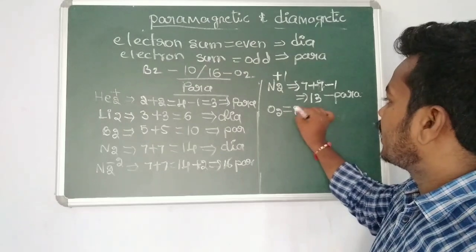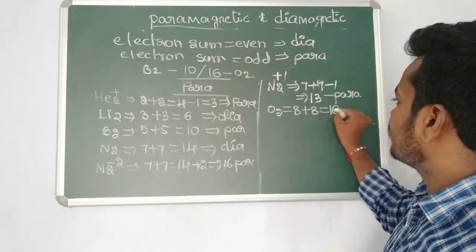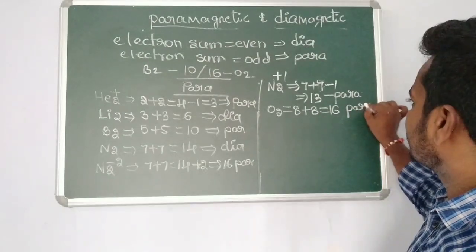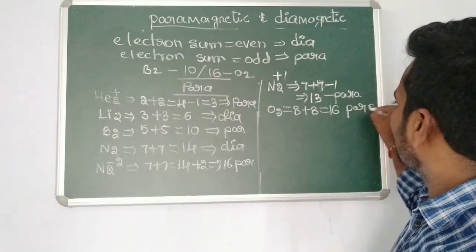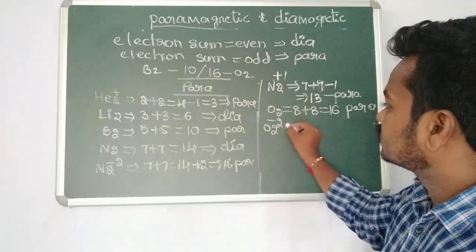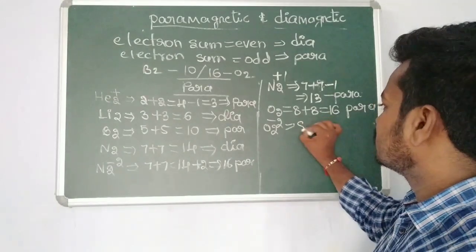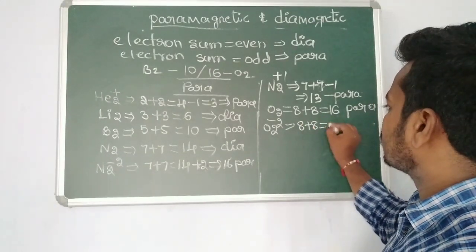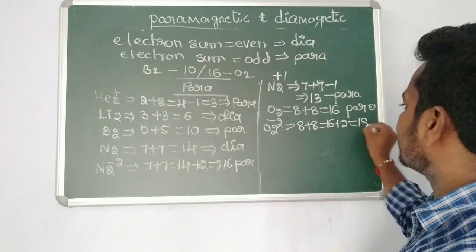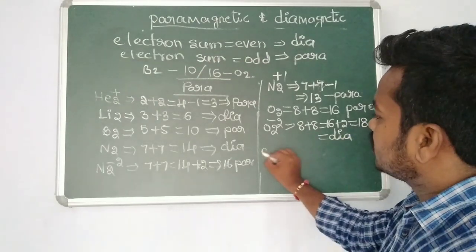Next, O₂: 8 + 8 = 16 electrons. Even though it is an even number, it falls under the 16-electron exception, so O₂ is paramagnetic in nature. Next, O₂²⁻: oxygen gains 2 electrons, so 8 + 8 = 16, plus 2 = 18 electrons. 18 is an even number, so O₂²⁻ is diamagnetic in nature.